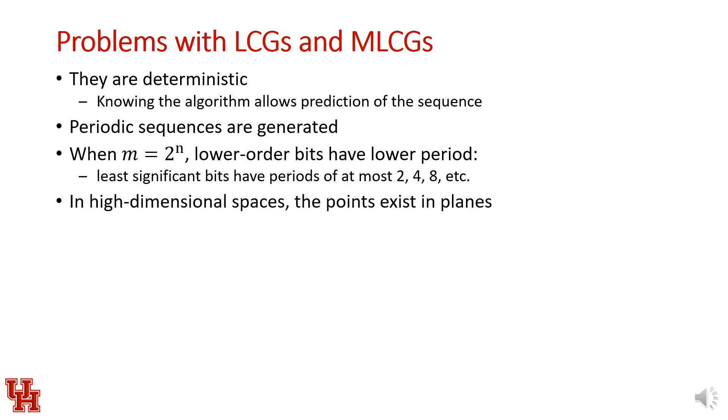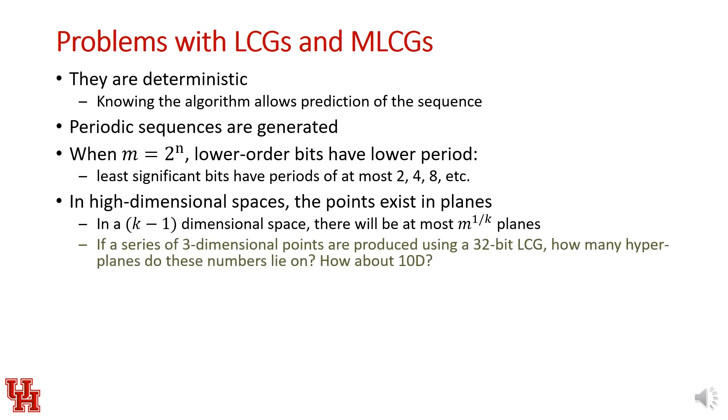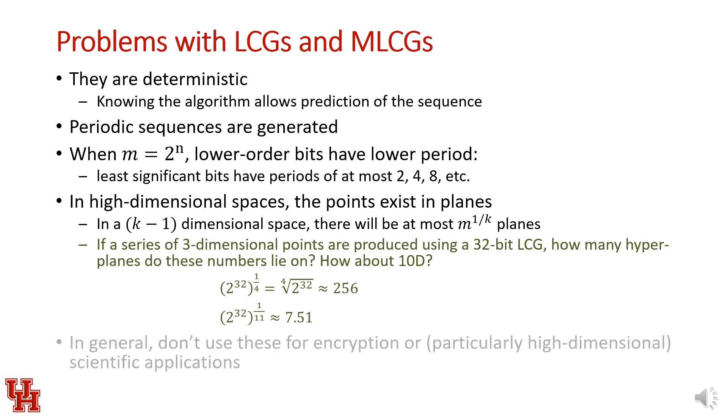Another thing is that in high dimensional spaces, if you generate random numbers like x, y, z coordinates by generating a series of random numbers, these random numbers will actually exist in parallel planes in this higher dimensional space. This gets pretty bad as you scale up the number of dimensions. If we're working in a k-1 dimensional space, we'll have at most the kth root of m planes generated. So if we have a series of 3-dimensional points and we're using a 32-bit linear congruential generator, this will generate about 256 planes in this 3-dimensional space. But if we move up to a 10-dimensional space, we'll be stuck with 7 to 8 planes where these numbers will be generated. In general, you don't want to use these types of random number generators for encryption or for high dimensional scientific applications.